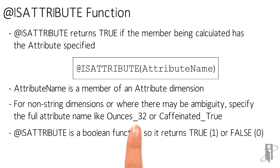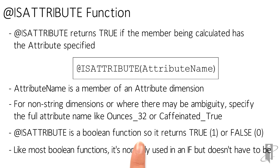This is a Boolean function, so it returns true (which is 1) or false (which is 0). Because it returns a 1 or a 0, you can use it outside of an IF — it's just not normally the way it's done. But there are plenty of times when using @IsAttribute can get you out of an IF, and that's a good idea because IFs are really slow.